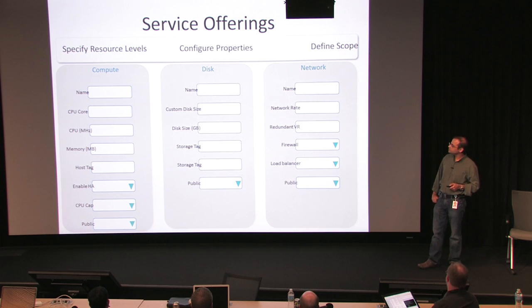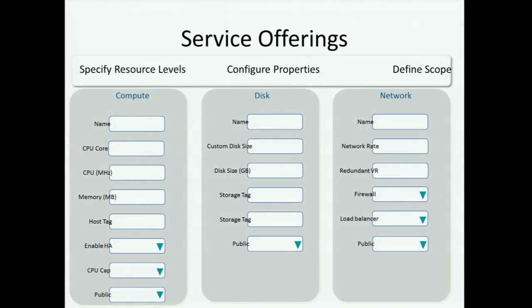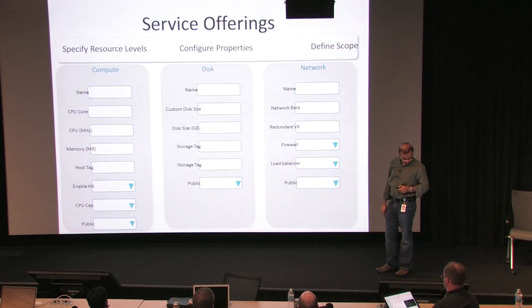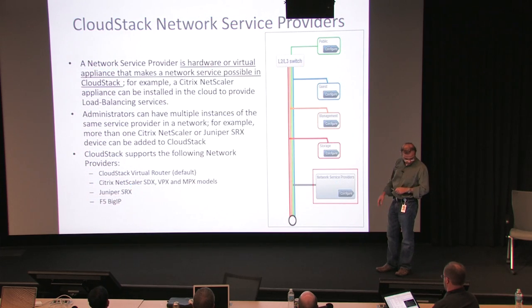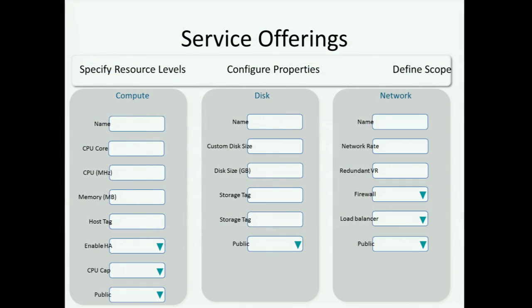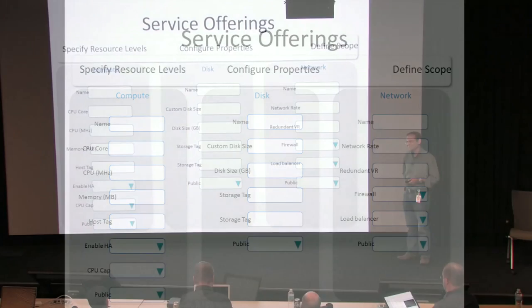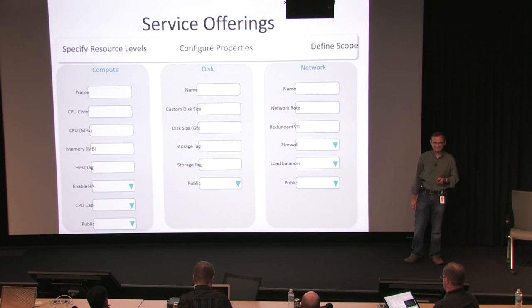Reiterating the offerings: compute offerings, disk offerings, network offerings. I've talked about storage tags, and you can also define network tags to specify which physical network the virtual network is configured on. Someone noted the disk slide shows two tags for storage — I can fix that.